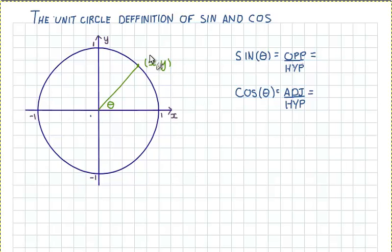And we can also draw a triangle using this line. So if we draw a vertical line coming down from the point to the x-axis, that makes a right angle with the x-axis.